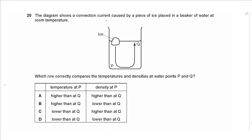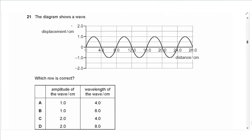Question 20: the diagram shows a convection current caused by ice placed in a beaker of water. The cool water around the ice is denser and falls. Comparing points P (bottom) and Q: P has lower temperature than Q and higher density than Q, so the answer is C.